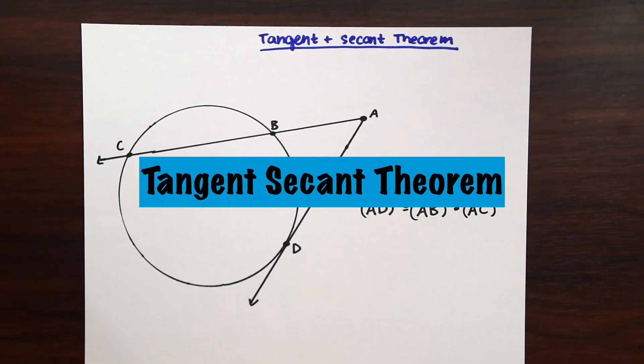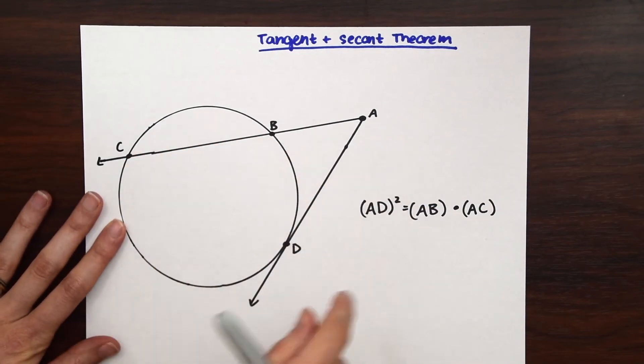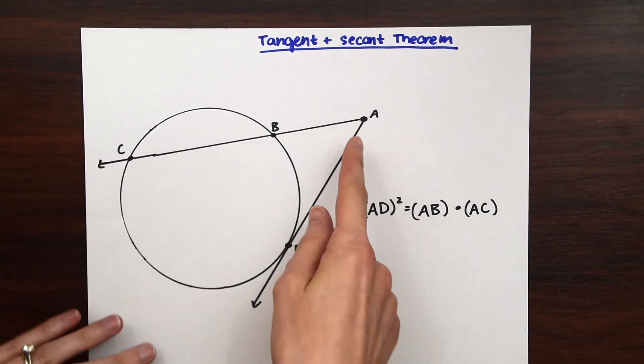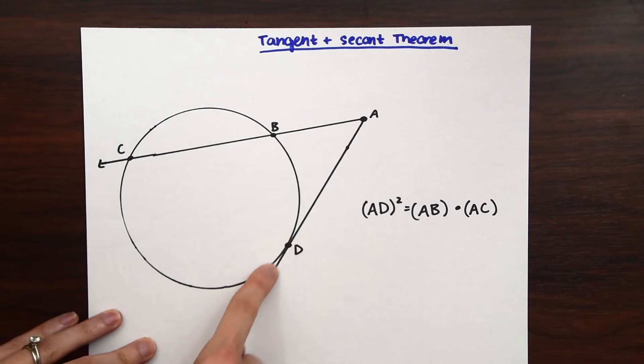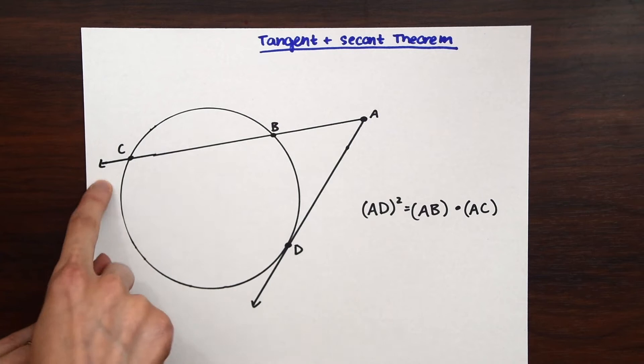So before we look at our examples let's first look at our theorem. So we have our circle and notice we have a tangent and a secant. Remember a tangent touches the circle on one point outside the circle and a secant goes right through the circle touching it through two points. So we have our tangent here and our secant over here.